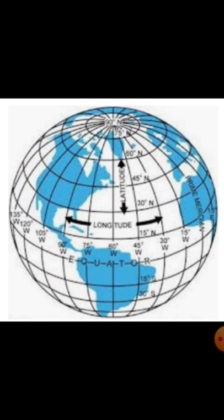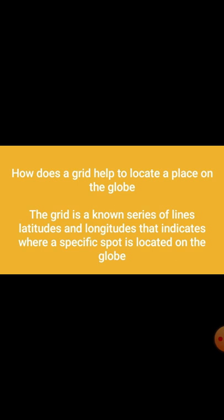The grid is known as the series of lines — longitude and latitude — that indicate where a specific spot is located on the Earth. For example, all places along the 49th parallel are the same distance from the equator.